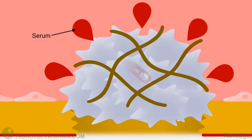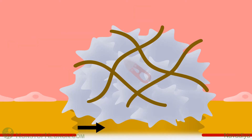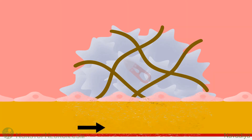Also, the clot oozes serum. Serum is basically plasma but it does not have clotting factors, as they are used up in clot formation, so serum cannot coagulate. Next, the damage is gradually repaired and normal parenchyma or scar is formed. So now the clot is no longer needed and it should be removed.